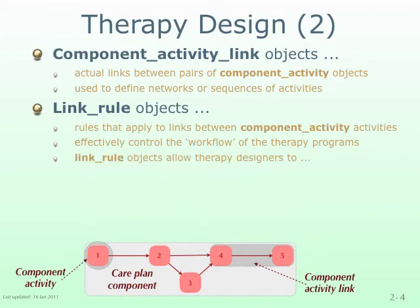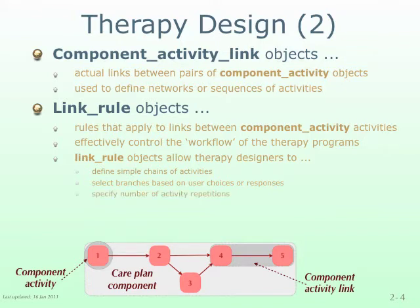The link rule data object allows a therapy program designer to define simple workflows consisting of a chain of activities, or to select particular branches in the workflow based on the stroke survivor's choices or responses, or to specify the number of activity repetitions before the next activity is commenced, or specify activity repetition until or while specified criteria such as performance targets are met or not met.